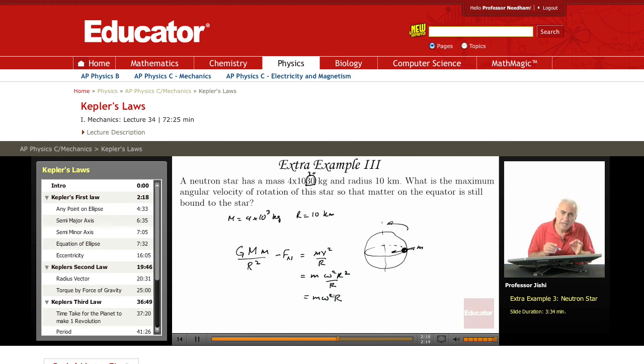So if this is to stay bound to the star, Fn must be greater than or equal to 0. If the normal force becomes 0, it means it will not stay stuck to the star, it will fly away. So Fn must be greater than or equal to 0 for this to stay stuck there. So this means that Gmm over R squared minus m omega square R, which is Fn, must be greater than or equal to 0.